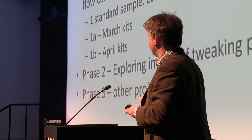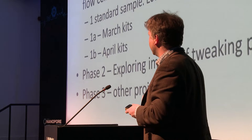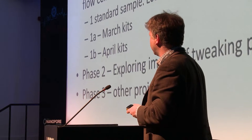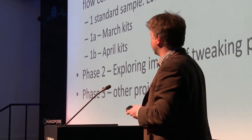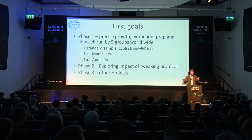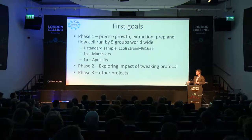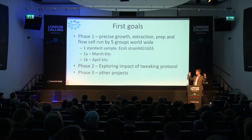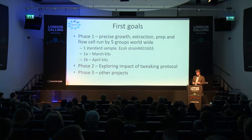Phase one comes into two sub-phases, A and B. Oxford Nanopore told us they were going to change the kits a little bit on the front end — the adapter sequences — so we did both with the March and the April kits. We're now moving into phase two, which is exploring tweaking of the protocol outside of the Oxford Nanopore setup: extraction, manipulation, how low the DNA can go, whether doing PCR beforehand will be good or not. Phase three covers other projects, but phase one and phase two are keeping us busy.